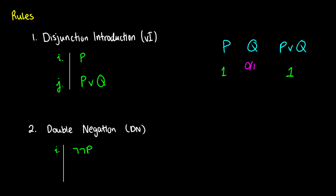Double negation comes from our truth trees and pretty much everything we've already done. If we have not-not-p, the negations cancel out and we get p. We can see this with truth values: if p is true, then not-p is false, and then not-not-p is true again because we negate not-p. So with double negation, we can just get rid of every two pairs of nots.